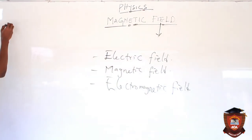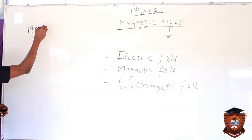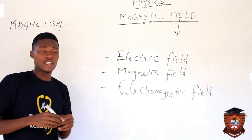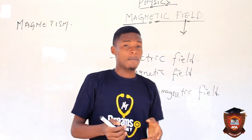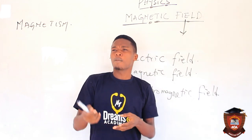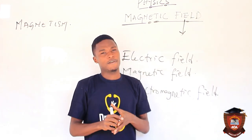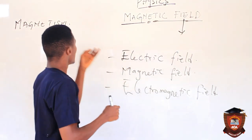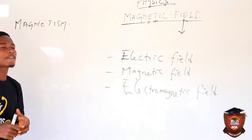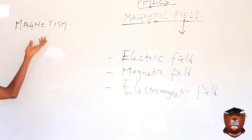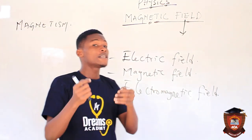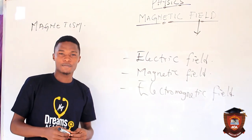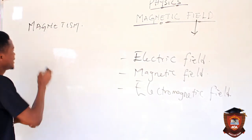Now we have to talk about the phenomenon of magnetism. There are some materials that, whenever you bring them close to metals, they tend to attract substances to themselves. This phenomenon is known as magnetism, and it is dated back to the ancient Chinese, who found out about a particular stone that was able to attract substances to itself — and that stone is lodestone.